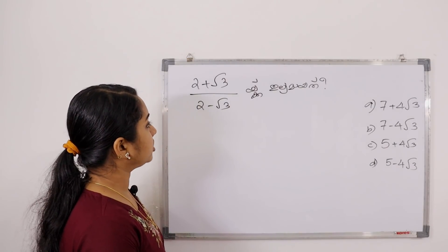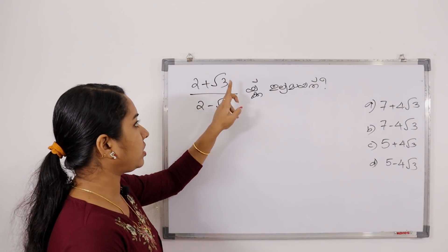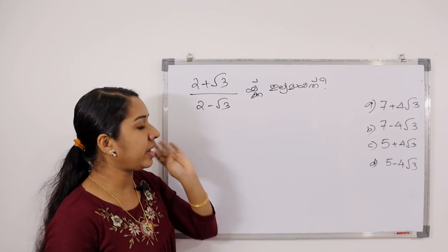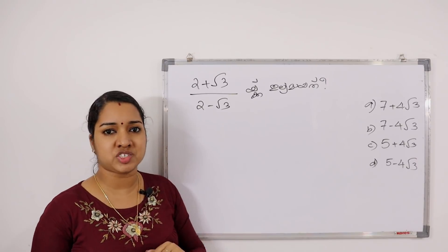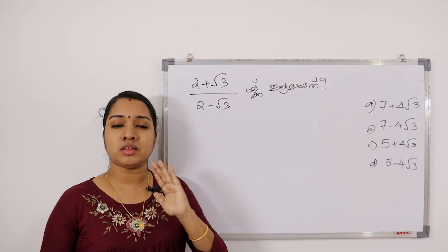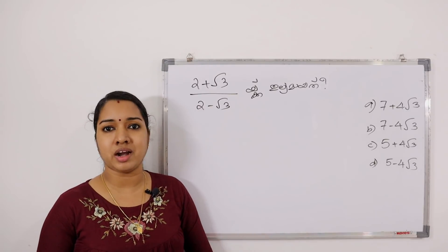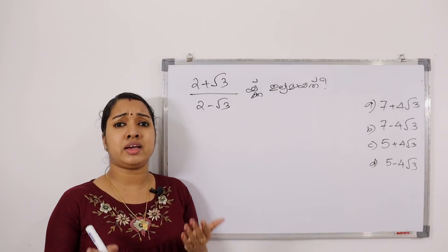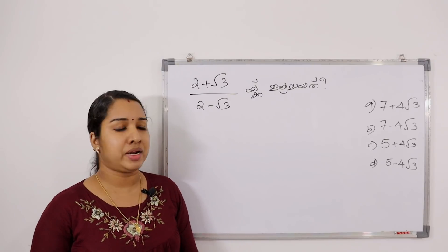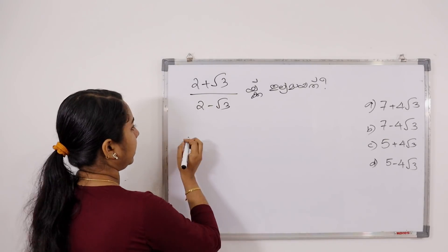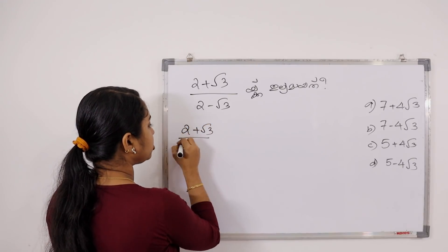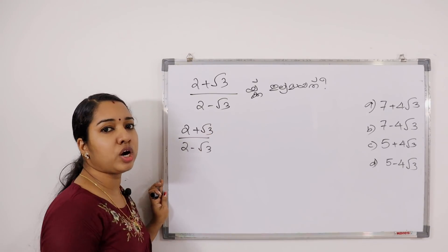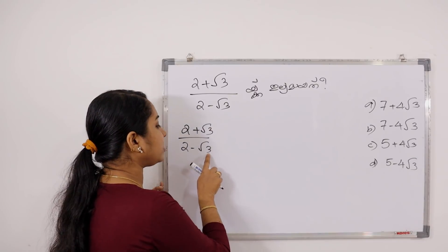2 plus root 3 by 2 minus root 3. We will say that 2 minus root 3 is a square minus b square. But here, by 2 minus root 3, we will use the opposite sign and multiply it to rationalize. That is 2 minus root 3 becomes 2 plus root 3 when we flip the sign.